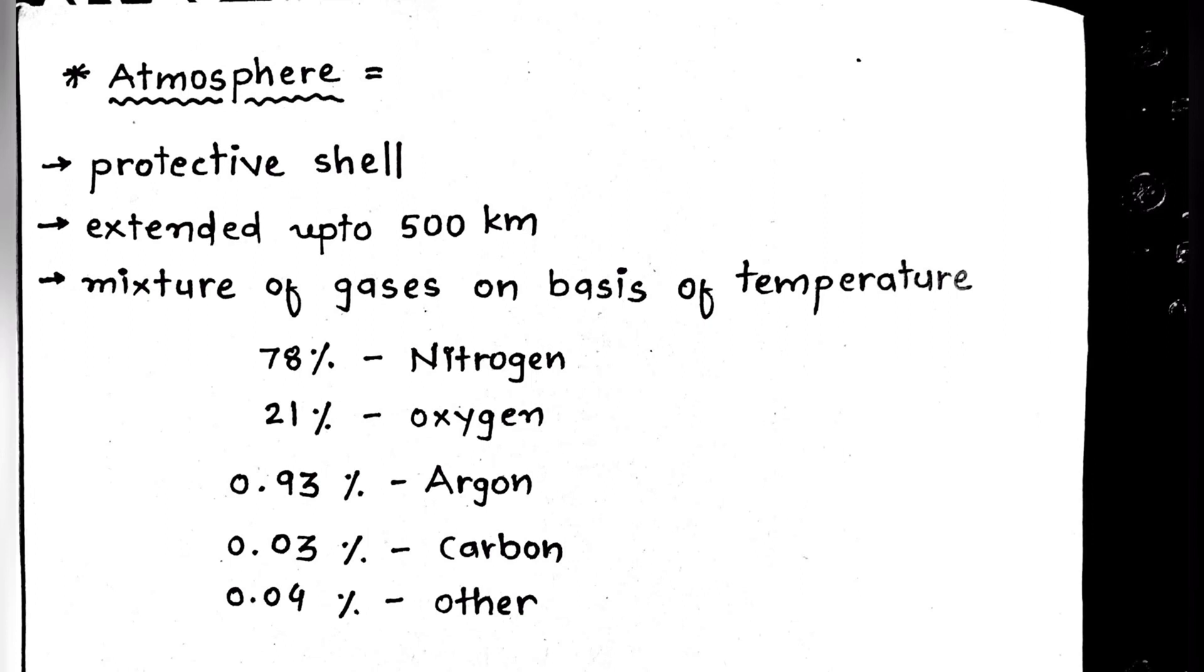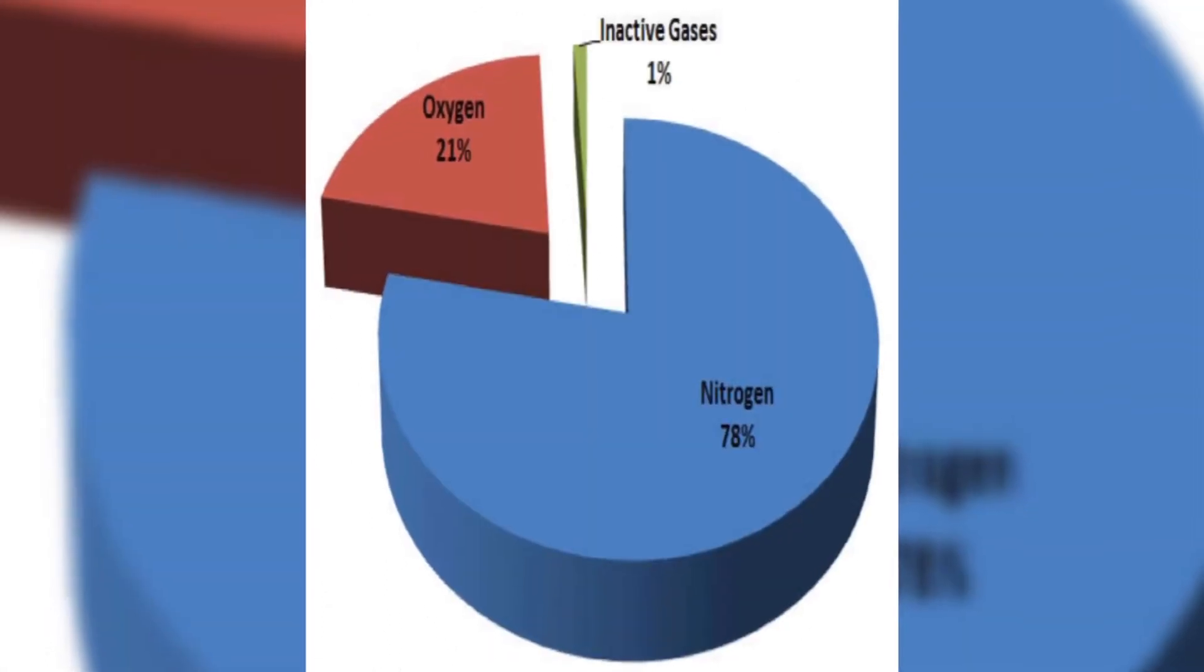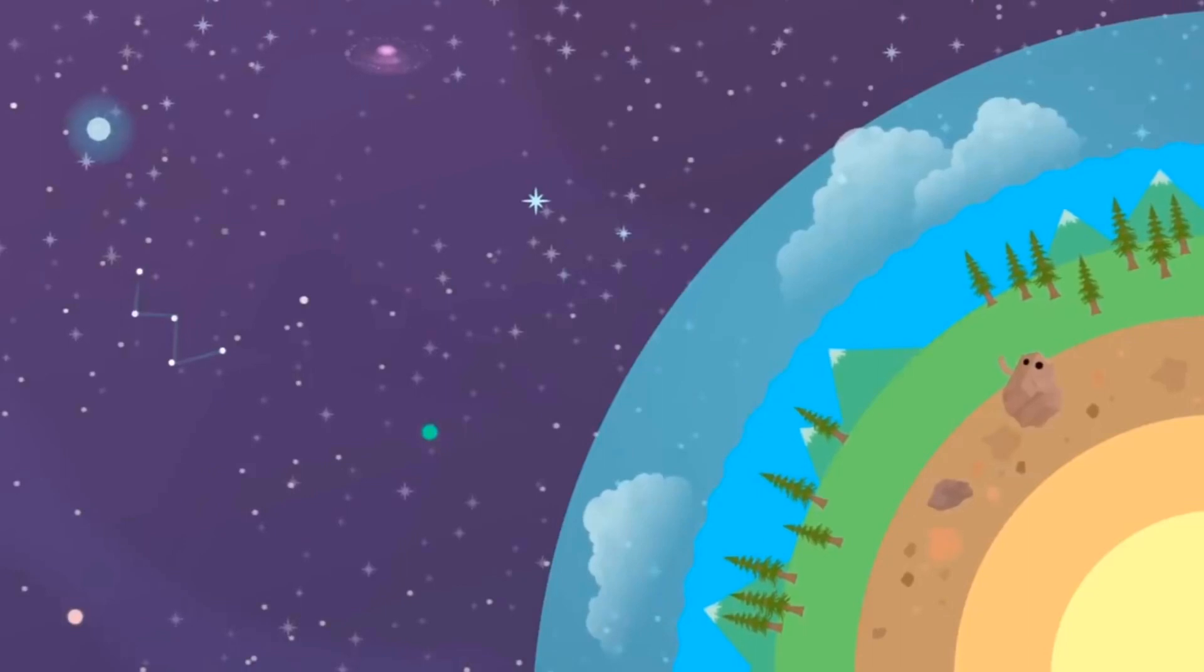In the atmosphere there is a mixture of gases: 78 percent nitrogen, 21 percent oxygen, and 1 percent others. On the basis of temperature, atmosphere is subdivided into four other layers.